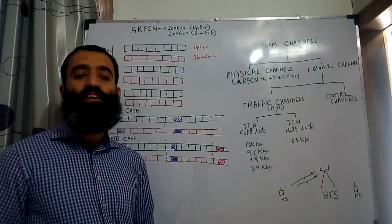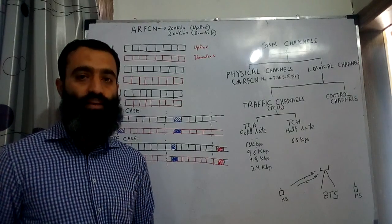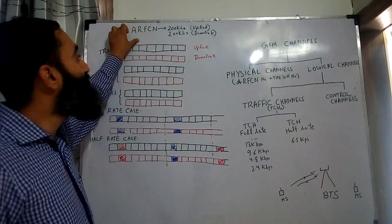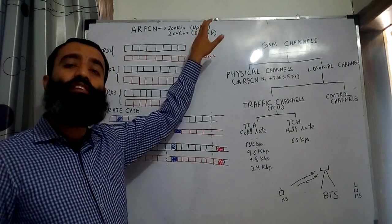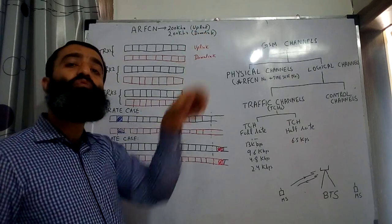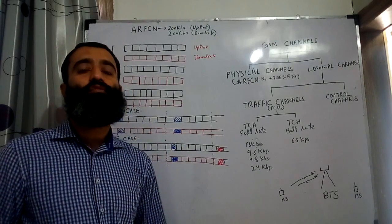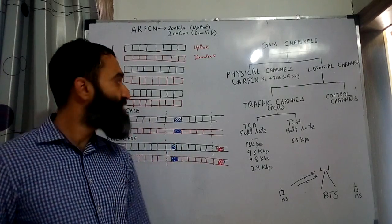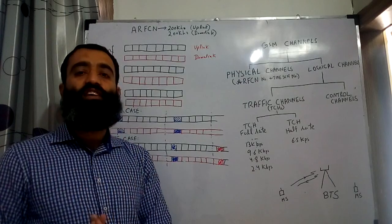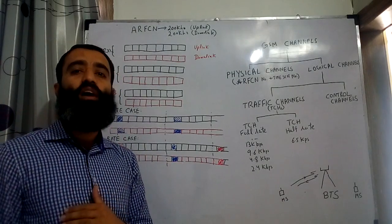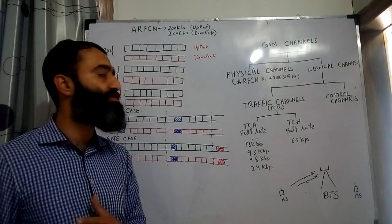These are basically assigned in the form of ARFCNs or absolute radio frequency channel numbers. One absolute radio frequency channel number basically consists of a 200 kHz frequency in the uplink and a 200 kHz frequency in the downlink. One such ARFCN is basically handled by one TRX. So the number of ARFCNs that have been given to a base station determine the number of TRXs it has.